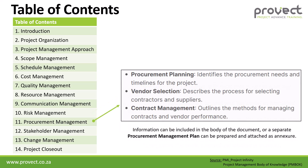Procurement management covers procurement planning, which identifies the procurement needs and timelines of the project, vendor selection describing the process for selecting contractors and suppliers, and contract management outlining the method for managing contracts and vendor performance. The information can be included in the body of the document or a separate procurement management plan can be prepared and attached as an annexure.